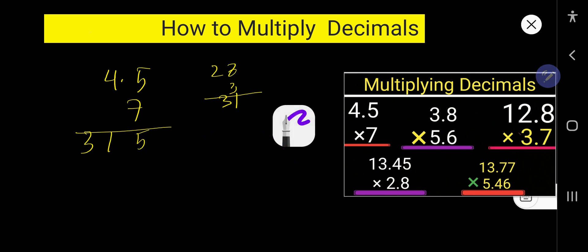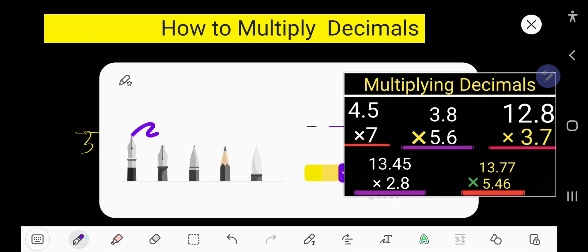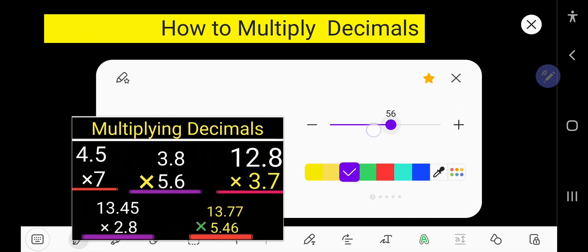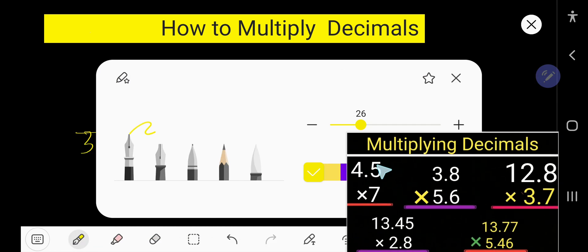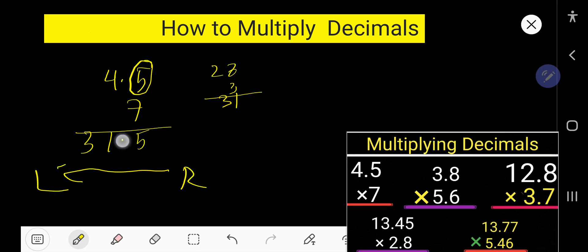At last, we need to place the decimal point in the answer. After the decimal, the number of digits is 1. So, you need to start from right to left and place the decimal after one digit. So, 31.5 is the answer.